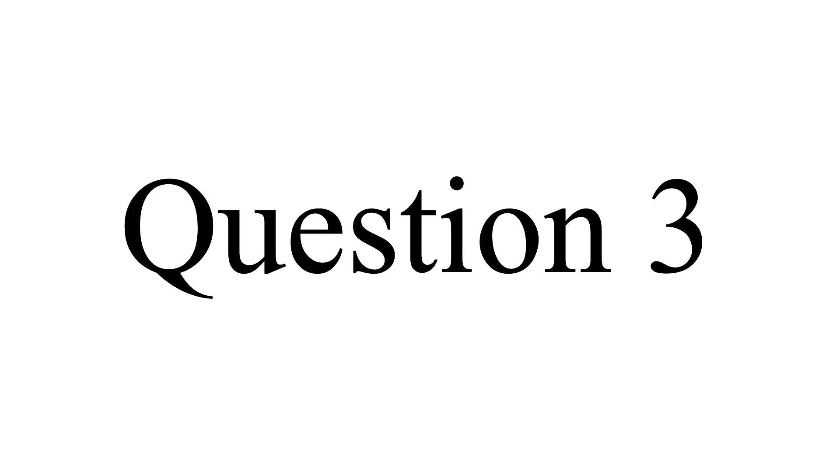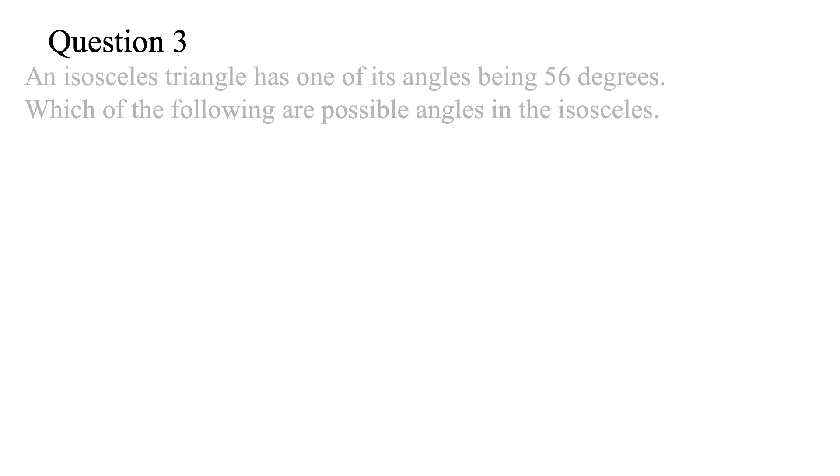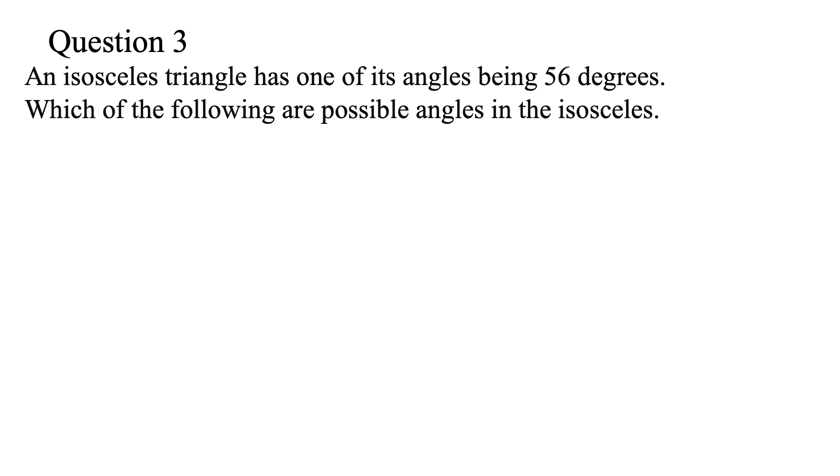Question 3. Let's try something harder here, just to get you thinking. An isosceles triangle has one of its angles being 56 degrees, which of the following are possible angles in the isosceles. This will definitely not be asked in a standard test like the GED, but can be asked on a geometry test.